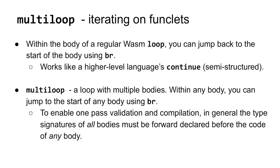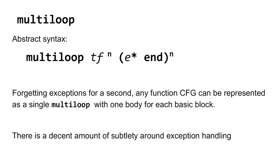To make sure that one-pass validation is still possible, the construct in general must pre-declare the types of all of its bodies before the code of any of the bodies. Here's an initial sketch of the abstract syntax: you declare n type signatures followed by n bodies corresponding to each type signature. We can compile an arbitrary, possibly irreducible control flow graph to a single multi-loop just by turning every basic block into a multi-loop body, and every edge between blocks into a BR instruction targeting the appropriate body.